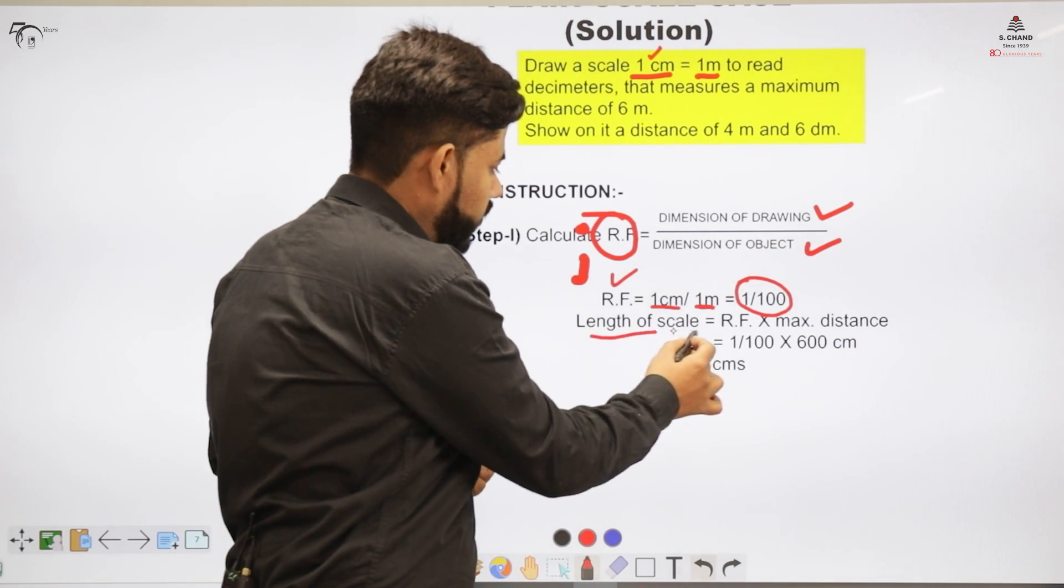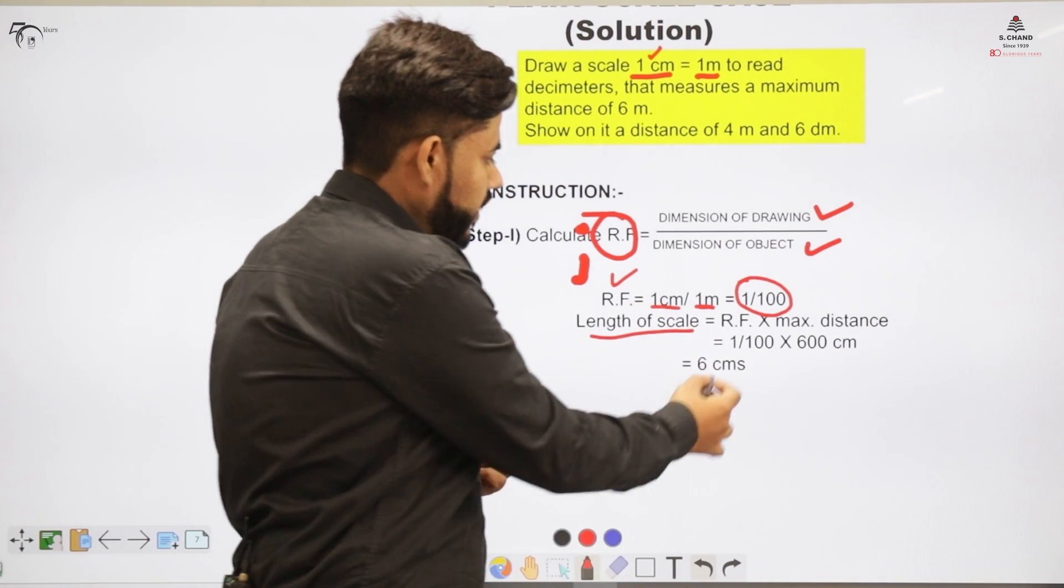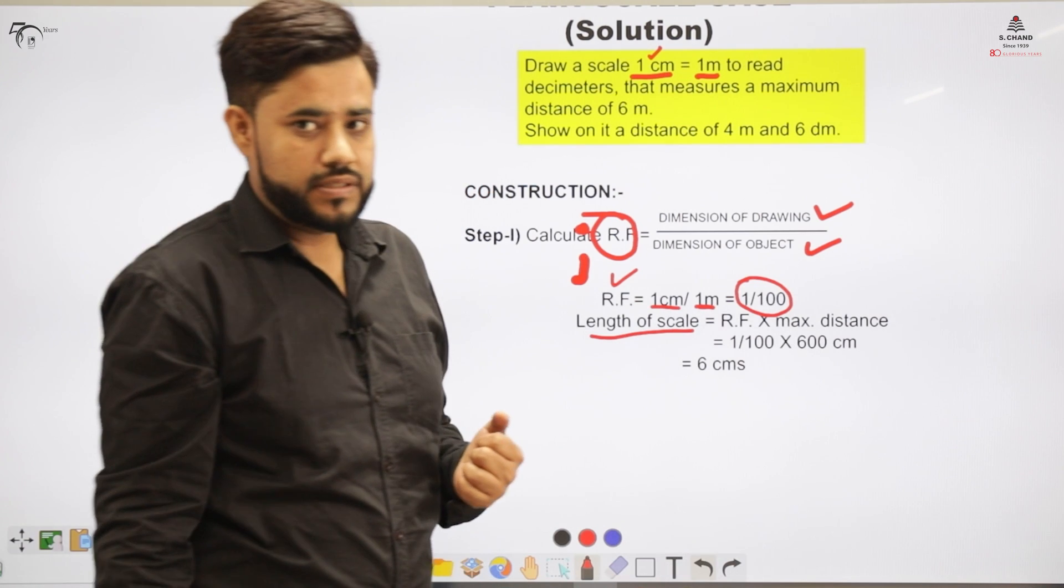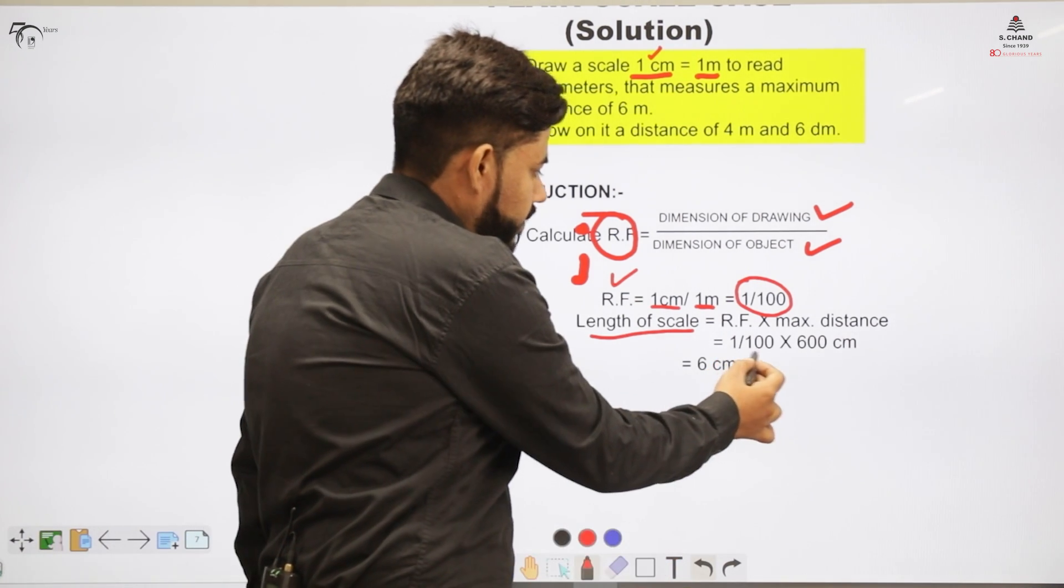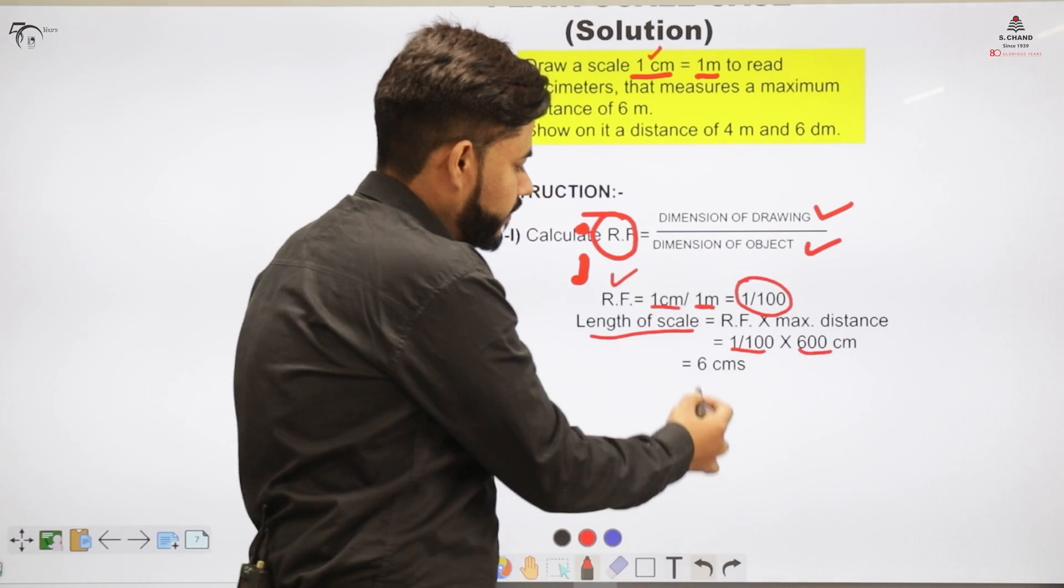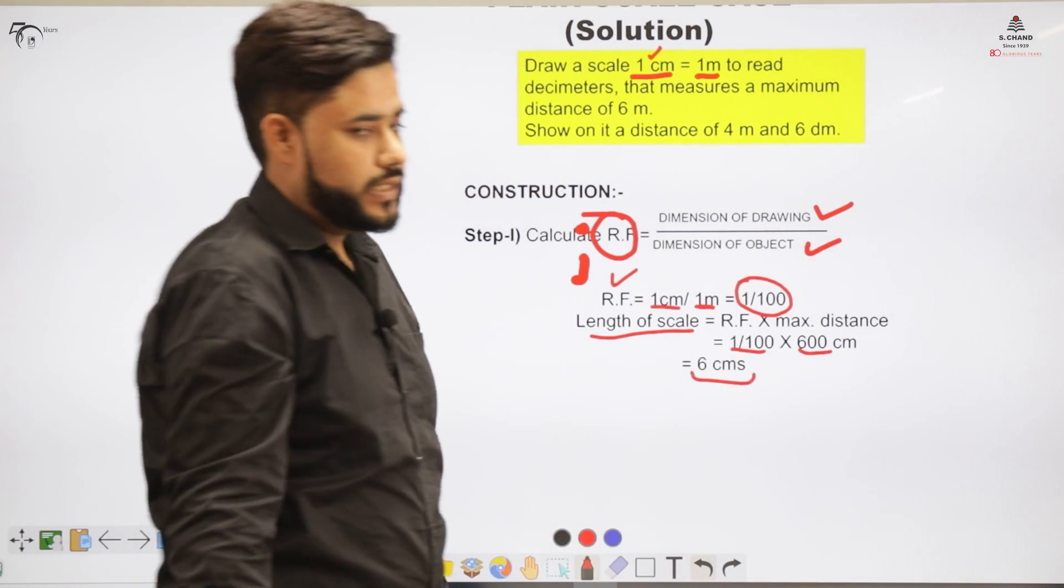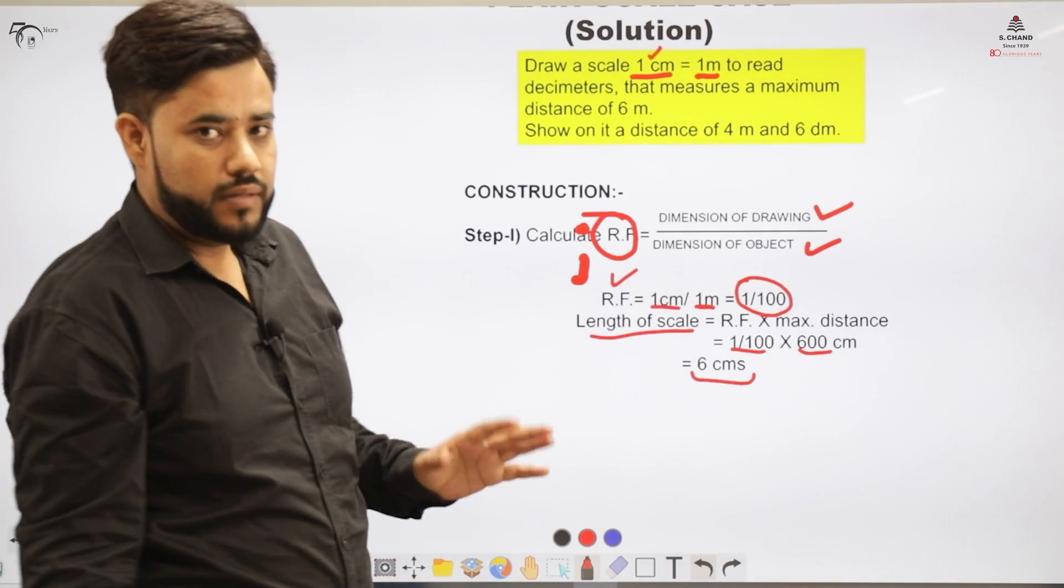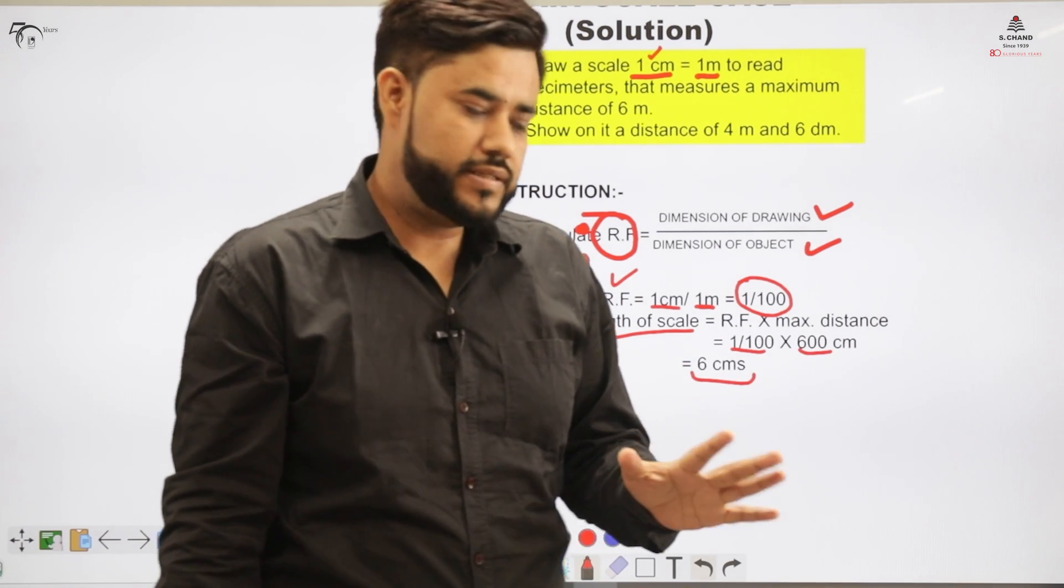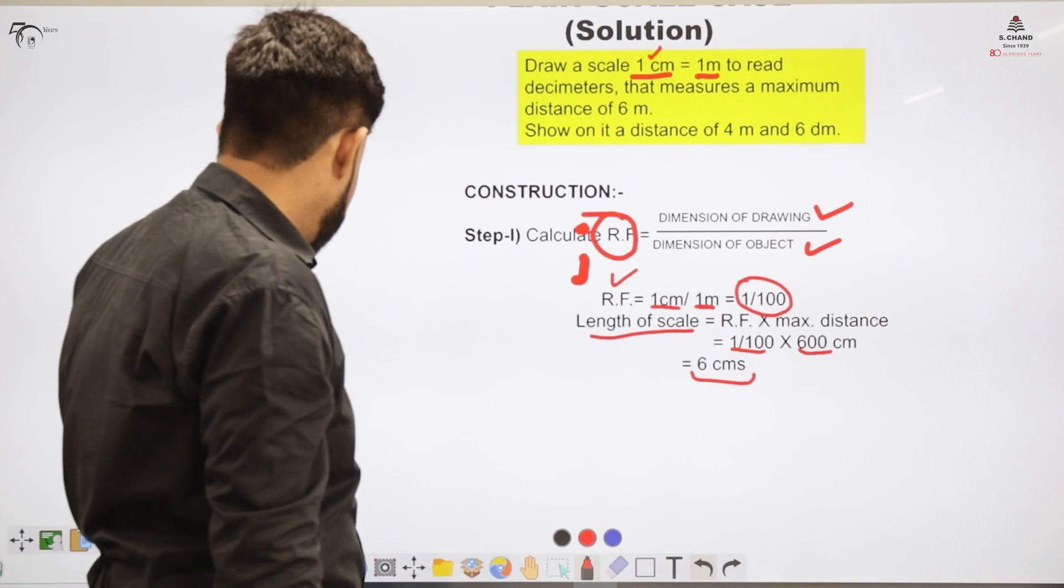Coming to the length of the scale that I want to calculate, that would be RF multiplied by the maximum distance. So 1 by 100 multiplied by 600 that will give me the result as 6 centimeters. So that means in my step 1 I have calculated a maximum distance which is 6 centimeter that is to be represented on the scale.